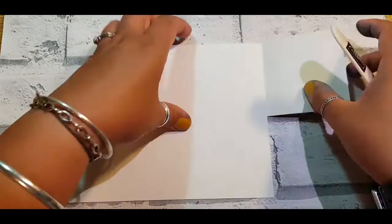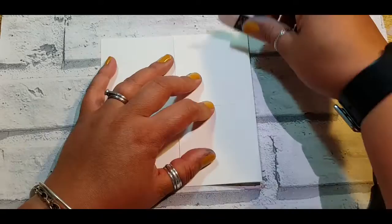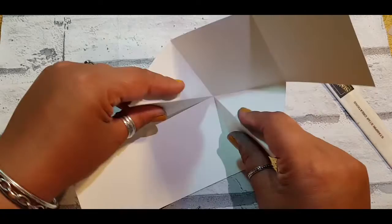Next you want to do a score line in the center panel in a diagonal direction, and then we're just going to be creasing and burnishing all those folds. And then don't forget to do the diagonal as well.